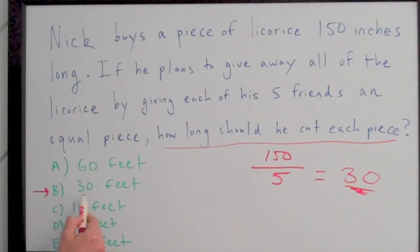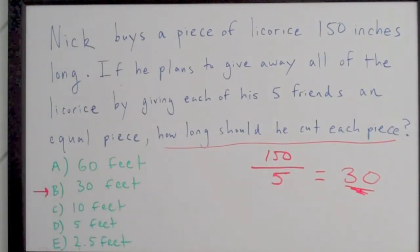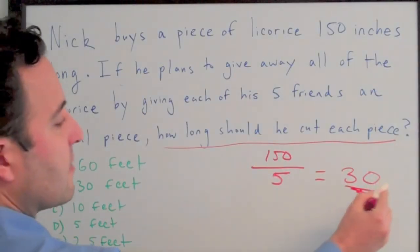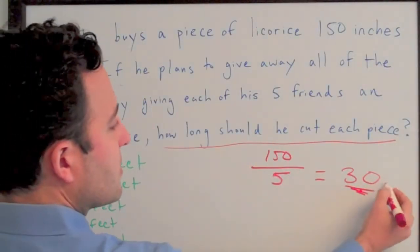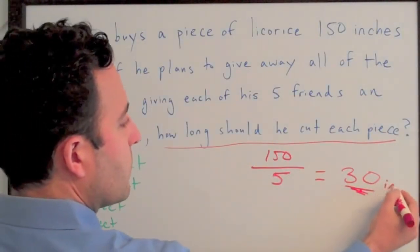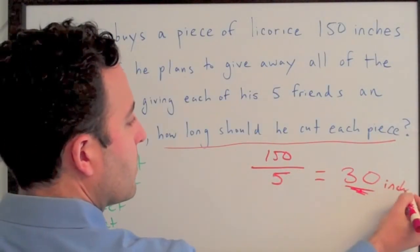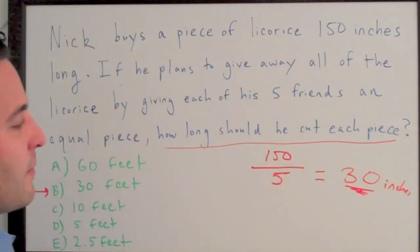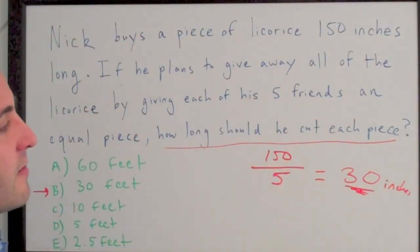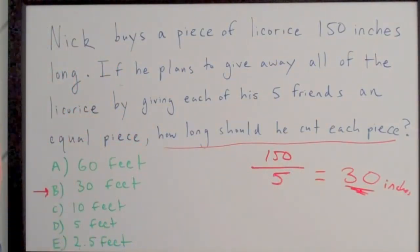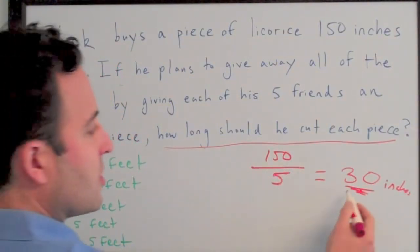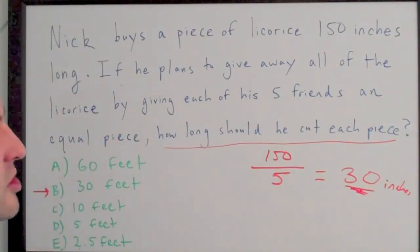Which says 30 feet. But they didn't convert their units of measurement correctly — they forgot that they have to take 30 inches, because 150 inches divided by five gives each friend 30 inches of licorice.